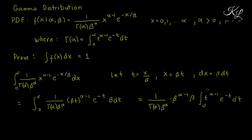For the constants: beta raised to 1 times beta raised to alpha minus 1 gives beta raised to alpha, which cancels with the beta raised to alpha in the denominator. What remains is 1 over gamma of alpha times the integral, which is exactly the definition of gamma of alpha. So gamma of alpha over gamma of alpha equals 1. That's our proof that the integral of the PDF of a gamma distribution is equal to 1.